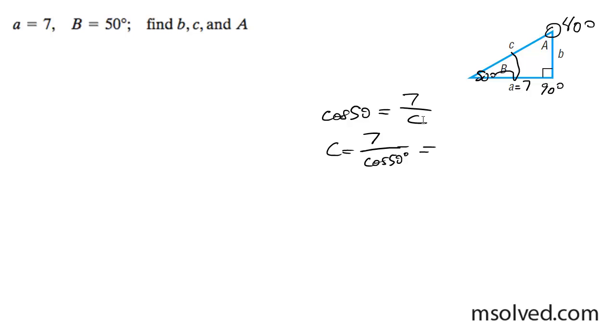So 7 divided by the cosine of 50, which gives me 10.89.